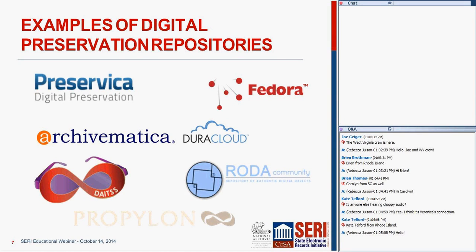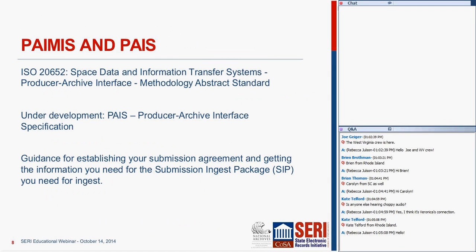We've recently had Archivematica with DuraCloud coming out. There's also DAITSS, a digital repository shared by 11 universities in the Florida Public University System—it stands for Dark Archive in the Sunshine State, which I thought was kind of awesome. ROTA was developed in Spain and stands for Repository of Authentic Digital Objects, which works as an acronym in Spanish though not so much in English. And Preservica is a company that developed ActiveArc, the online software in use by the Kansas Enterprise Electronic Preservation System.